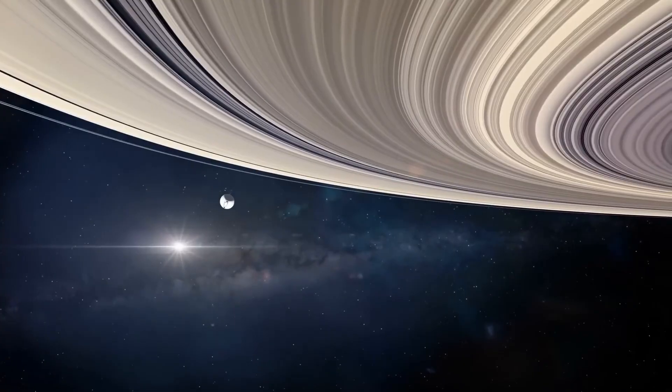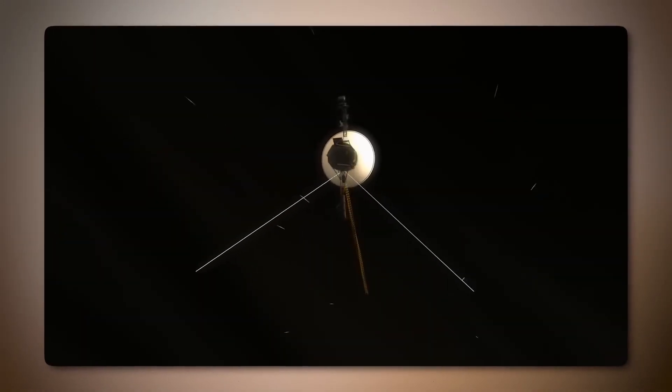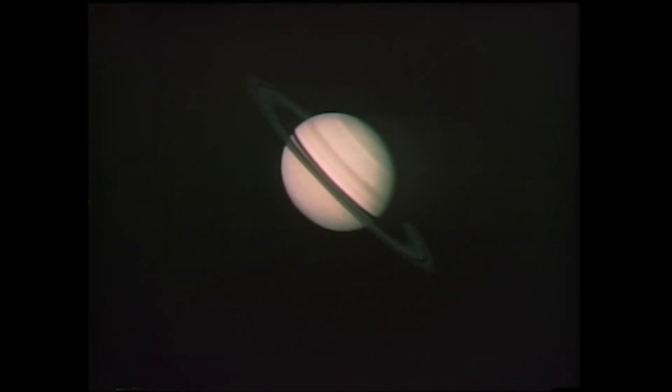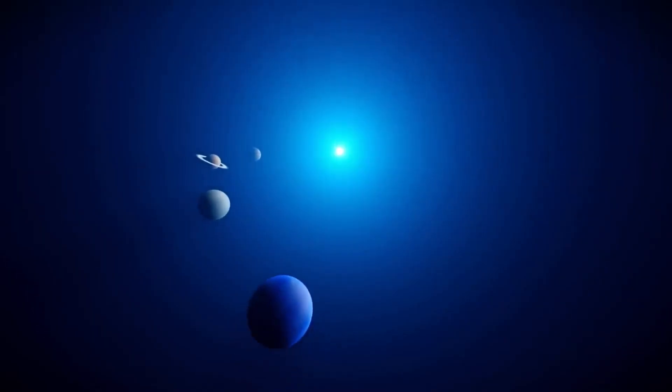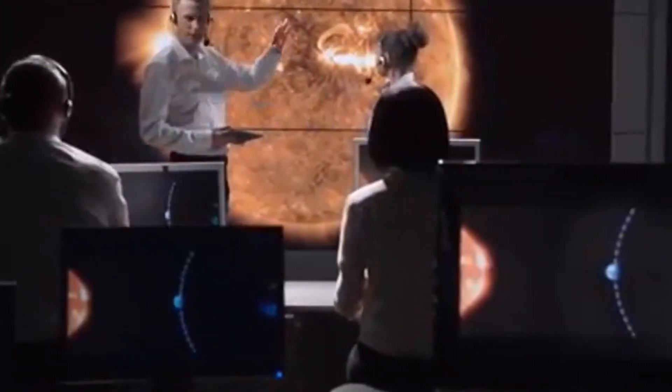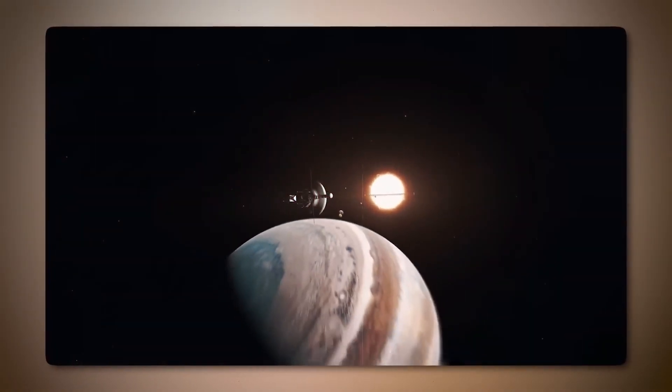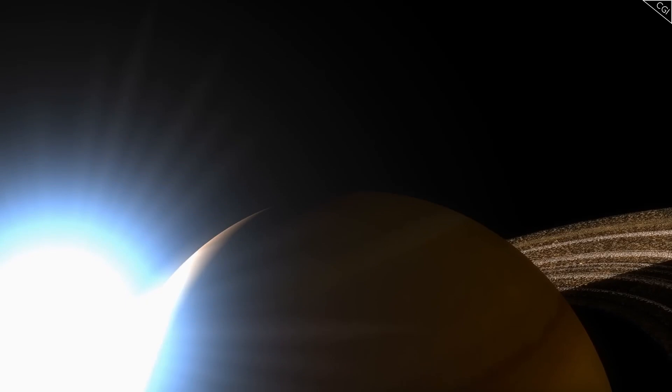Voyager 2 followed suit, crossing into interstellar space six years later, confirming the profound scientific significance of these twin spacecraft. The data from the Voyager spacecraft reveal many similarities, such as the overall density of particles encountered in interstellar space. However, their journeys revealed notable differences, sparking new questions about the Sun's trajectory through the galaxy. Voyager 2's observations as it crossed the heliopause are shedding light on some of the solar system's greatest mysteries.